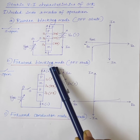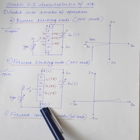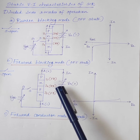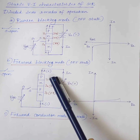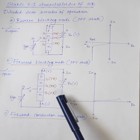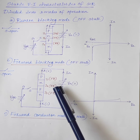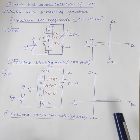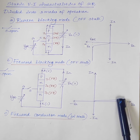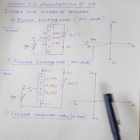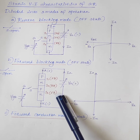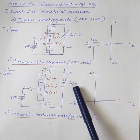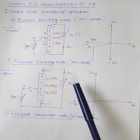The next mode is forward blocking mode. When the anode is positive with respect to cathode with the gate circuit open, the thyristor is said to be forward biased. Here J1 and J3 are forward biased, but junction J2 is reverse biased. In this mode, a small current called forward leakage current flows through the circuit from anode to cathode. The circuit is in the off state, so the SCR acts as an open switch.